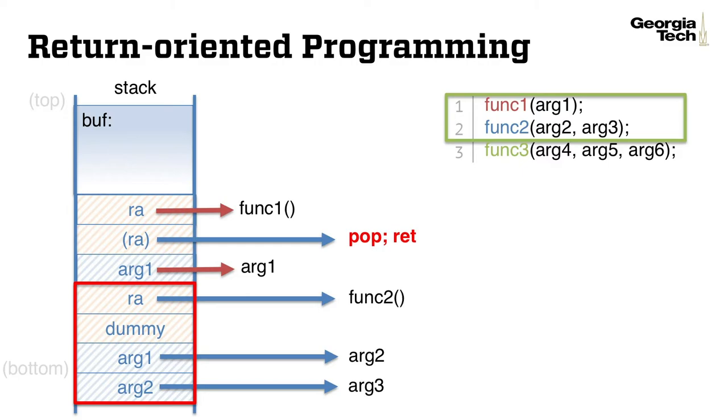In fact, the payload structure now is exactly the same as where we started. Since we can hijack the return address, we can redirect its flow to function 2 with corresponding arguments in the stack.